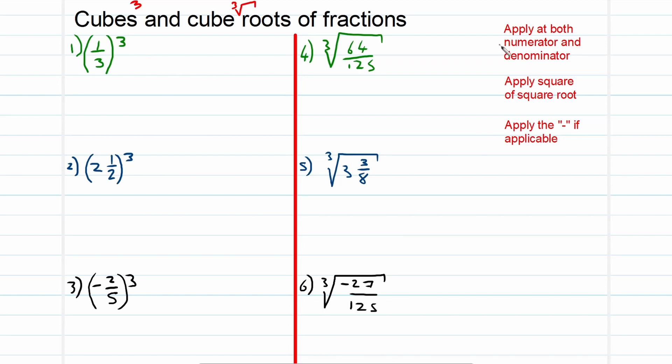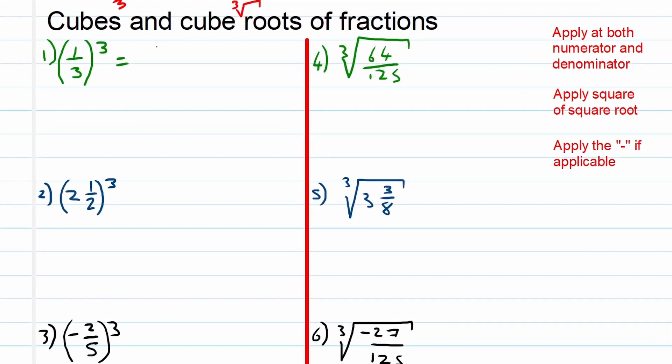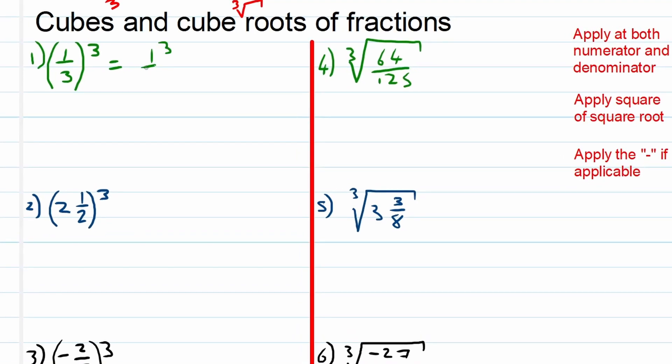So first of all, like with our square roots, the same apply: apply the cube root to both the numerator and denominator. So that means we can write this down as 1 to the power of 3 over 3 to the power of 3. The second part then is to apply this exponent to both the numerator and denominator separately, which means we will write it down as 1 over 3 times 3 times 3. Three times three times three is 27. That brings an end to this example.